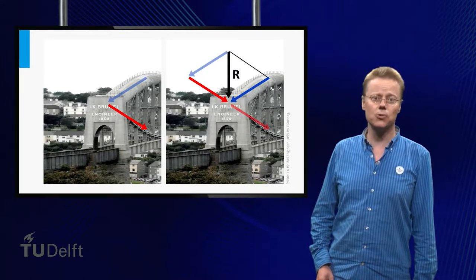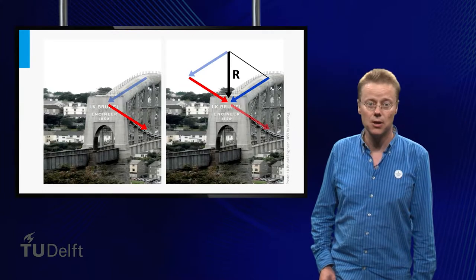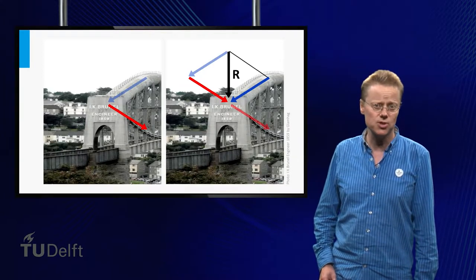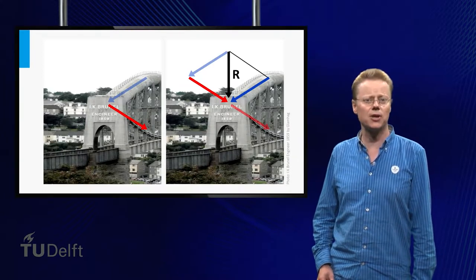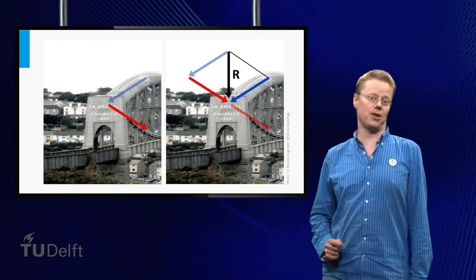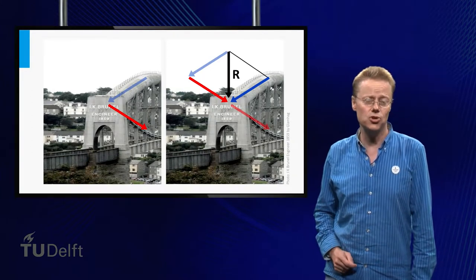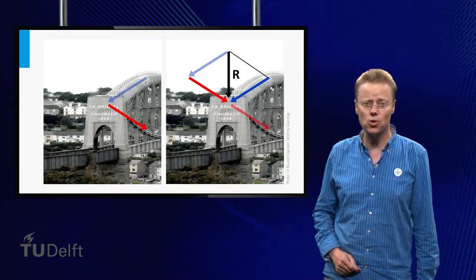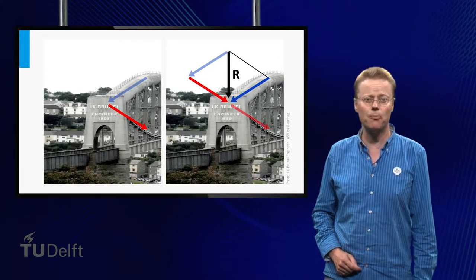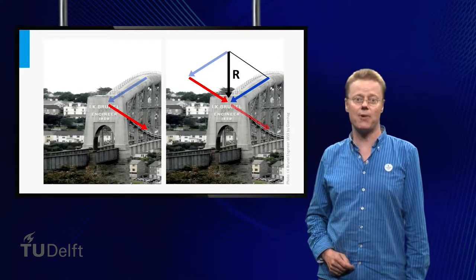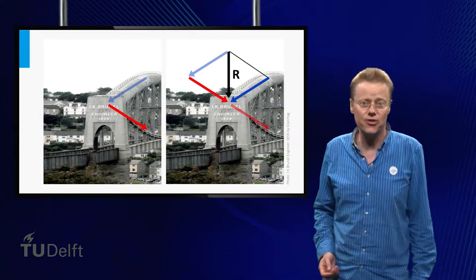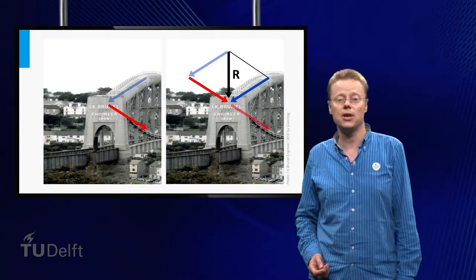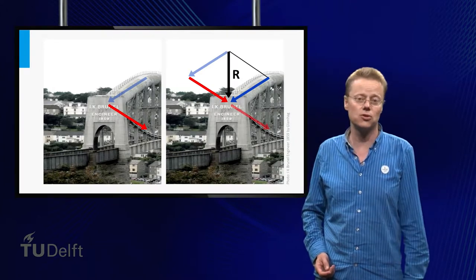Vector is a Latin word which means carrier. It was first used by 18th century astronomers investigating planet rotation around the sun. A vector is often used in geometry and in physics to represent physical quantities that have both magnitude and direction. Think of physical quantities like speed, movement, acceleration and force.